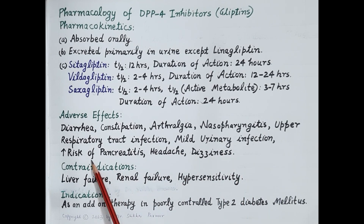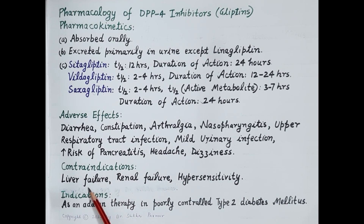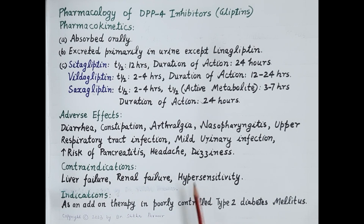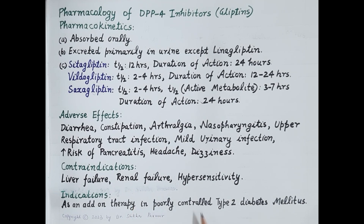These drugs also increase the risk of pancreatitis and can cause headache and dizziness. Contraindications include liver failure, renal failure, and allergy or hypersensitivity. Similar to GLP-1 receptor agonists, these drugs are also used as add-on therapy in combination with other anti-diabetic drugs to control poorly controlled type 2 diabetes mellitus.